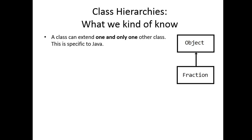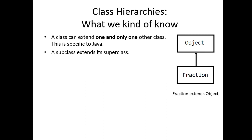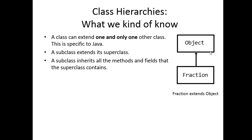This is an example of a very basic class hierarchy, where we have a fraction object and an object object. We say that a subclass extends its superclass, so fraction extends object. Remember that ISA idea? Whenever we draw a diagram in a class hierarchy, we should be able to go from the bottom up and use that ISA relationship — a fraction IS an object. A subclass inherits all the methods and fields that a superclass contains, so all the methods and fields that object contains, fraction now has.